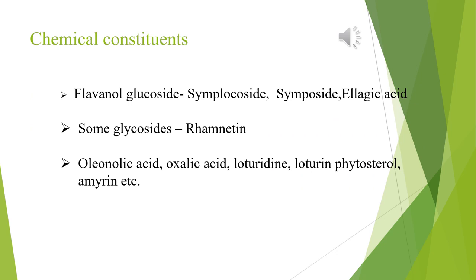Chemical constituents: Some flavan-ol glucosides are present in the bark of Lodra, for example symplucoside, symposide, ellagic acid, etc. Some glycosides like rhamnetin, some phytosterols, oleanolic acid, oxalic acid, loturidine, loturine, amyrin, etc. are the chemical constituents present in the plant Lodra.